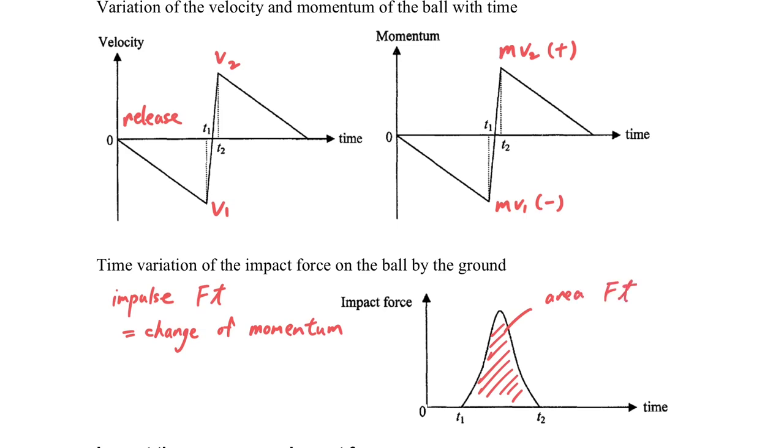If we consider the force-time graph, the area under the curve will be the impulse, which is F times t, which equals mv minus mu. So this is the physical meaning of the area under the force-time graph.